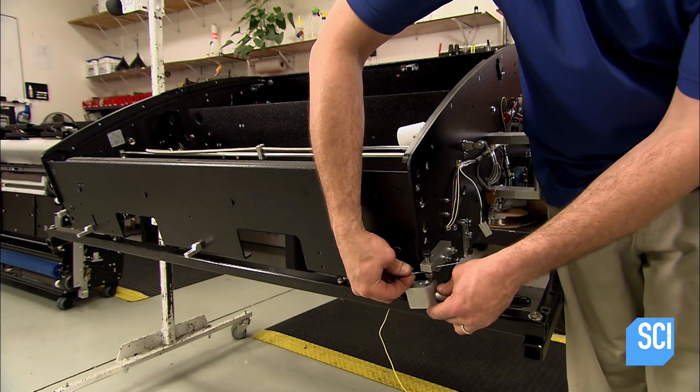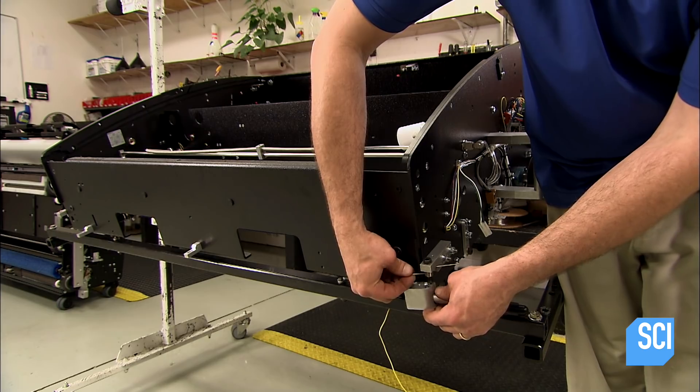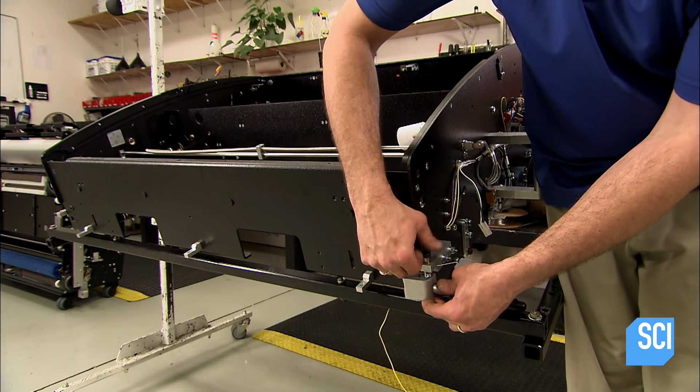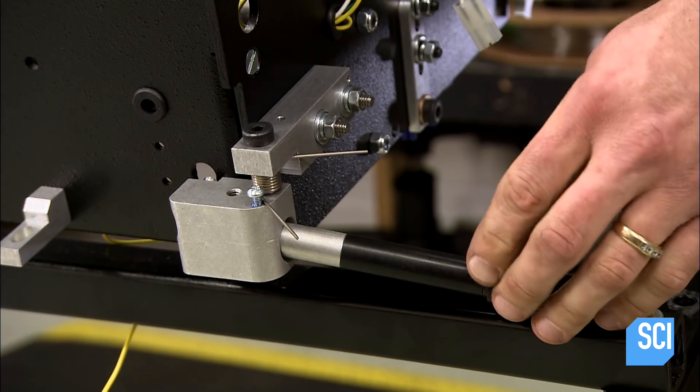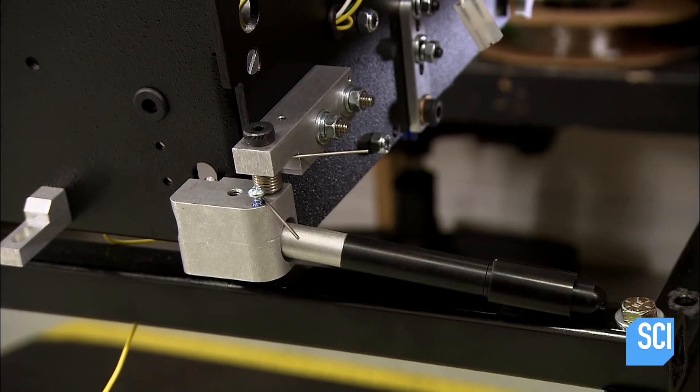He installs whisker sensors to the front on each side. When these whiskers brush the sides of the lane, they'll send a signal to the computer which will then direct the robot to move more to the center.